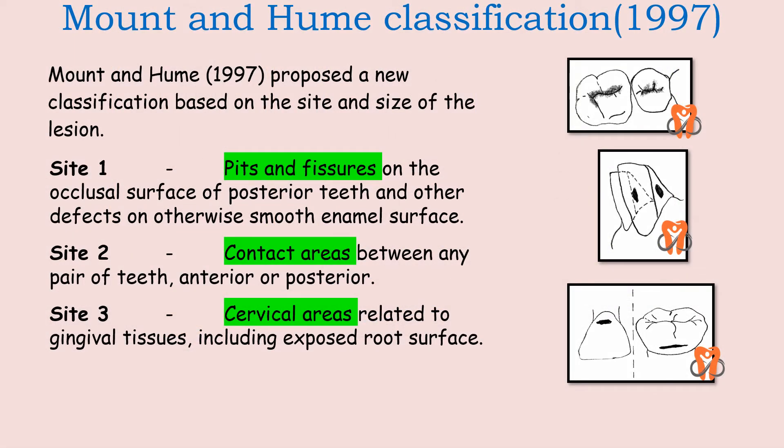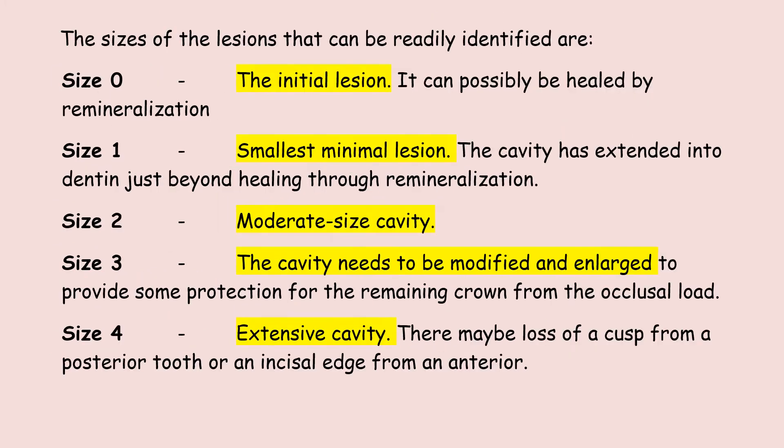To classify minimal invasive lesions, the Mount-Hume classification system is used, proposed in 1997. It is based on the site and size of the lesion. There are three susceptible surfaces: Site 1 — pits and fissures on posterior teeth; Site 2 — contact areas between any pair of teeth; and Site 3 — cervical areas close to the gingival tissue.